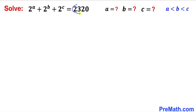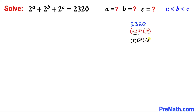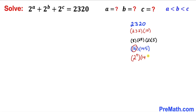Let's go ahead and scan this right-hand side number 2320 and factor it out. We can write this as 232 × 10, and 232 could be written as 8 × 29, and 10 as 2 × 5. Combining 8 × 2 gives us 16, and 29 × 5 gives us 145. Since 16 = 2^4, therefore 2320 = 2^4 × 145.